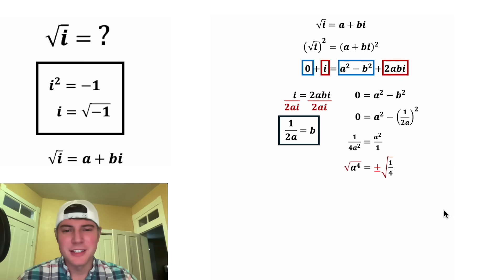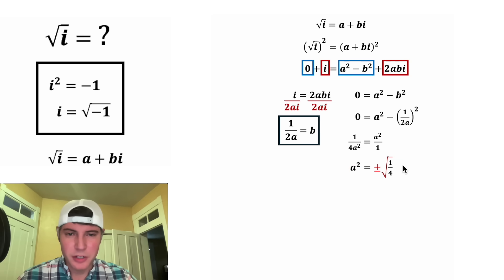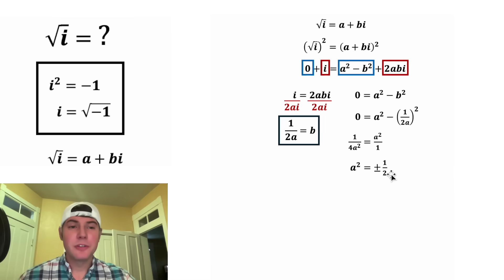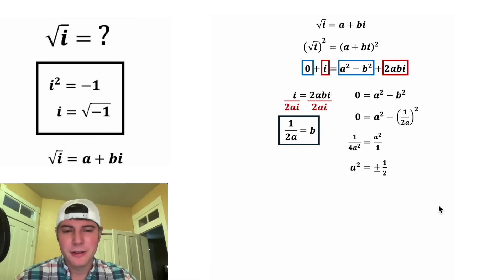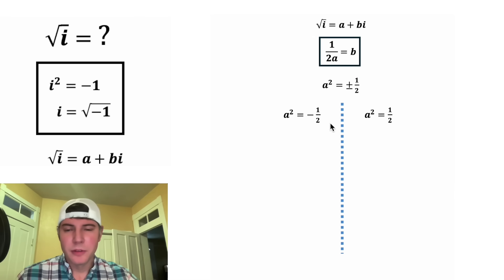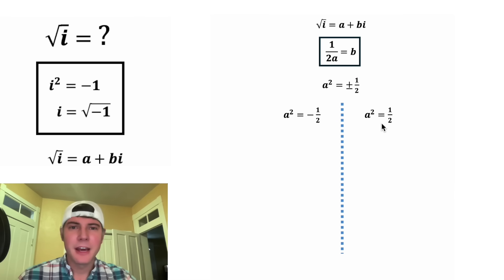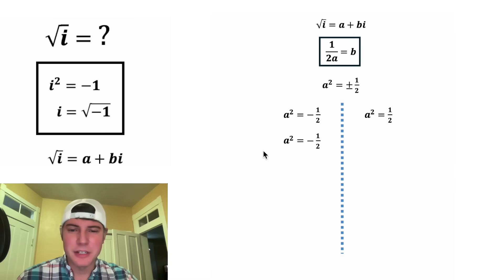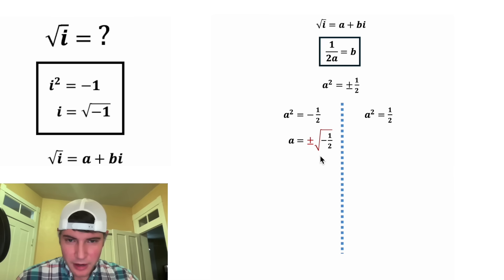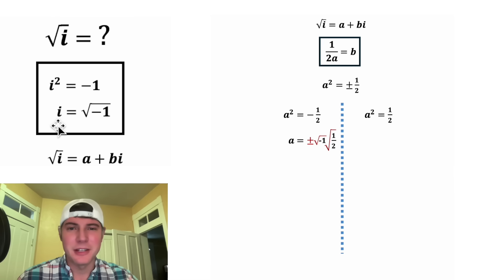Next, we can square root both sides. The square root of a to the fourth is a squared, and the square root of 1 fourth distributes to give 1 over 2. So a squared equals positive 1 half or negative 1 half. For the scenario where a squared equals negative 1 half, let's square root both sides: a equals the square root of negative 1 half. Pulling out the negative 1, since square root of negative 1 is i, we can write this as i times square root of 1 over 2.